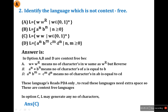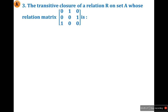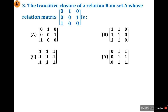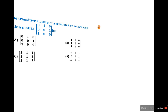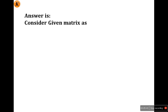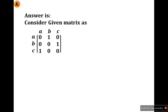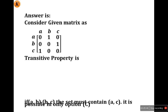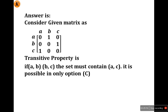Third question: the transitive closure of the relation R on set A whose relation matrix is given — there are four options. Transitive closure means it must hold the transitive property. Consider the given matrix and find which option satisfies transitivity.